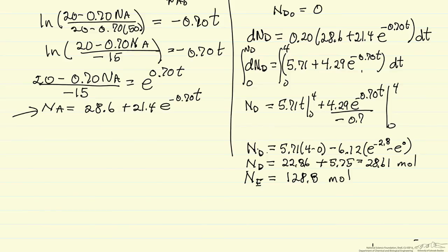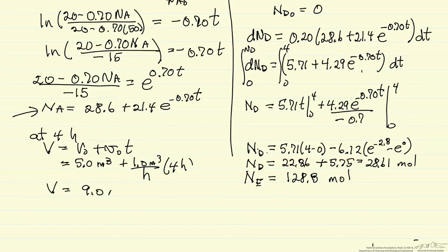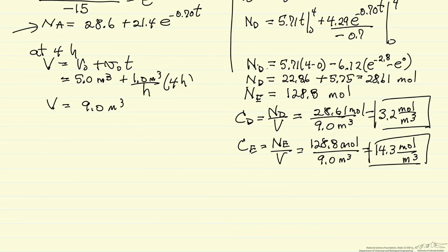But I want the concentration, so I need the volume. The volume after 4 hours is my initial volume plus the volumetric flow rate times time, since the volumetric flow rate is constant. This is 5 cubic meters plus 1 cubic meter per hour times 4 hours, so our volume after 4 hours is 9 cubic meters. The concentration of D is the number of moles over the volume after 4 hours. Here are the values we're asked to calculate - the concentrations after 4 hours. We might want to reduce this to two significant figures based on what's given in the problem statement.